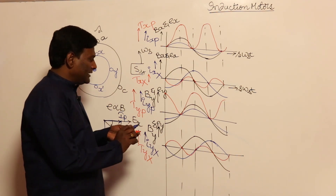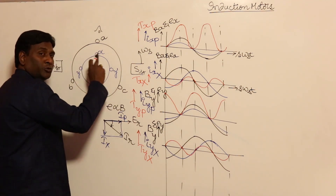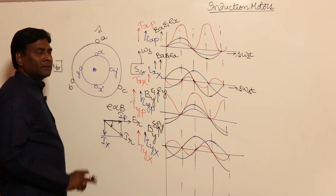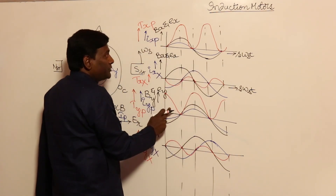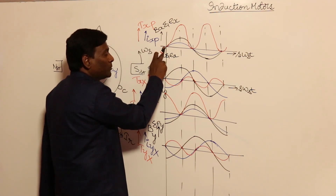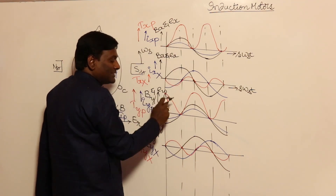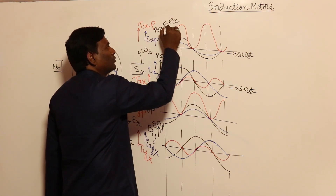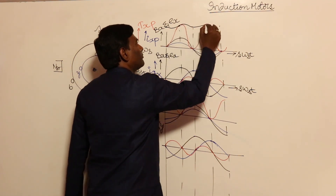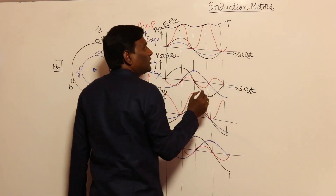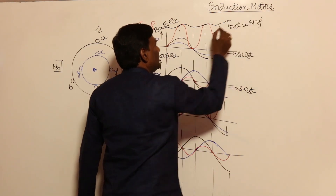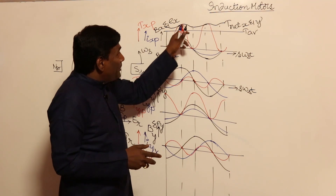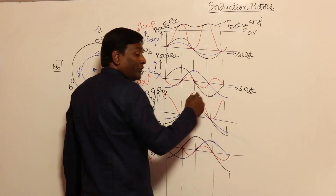Let us observe. If I combine, the net torque produced is because of X, X dash torque produced plus Y, Y dash torque produced, giving the net torque developed in the rotor. Looking at the in-phase components: whenever the torque from X is 0, the torque from Y is maximum. Whenever torque from Y is 0, torque from X is positive maximum. So this plus this — the net torque developed because of X, X dash and Y, Y dash — average torque production is improved, and pulsations are reduced.